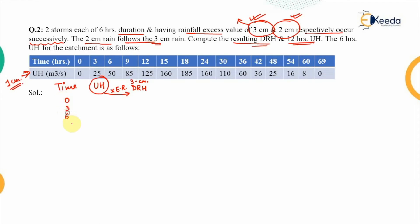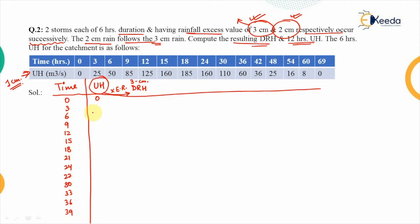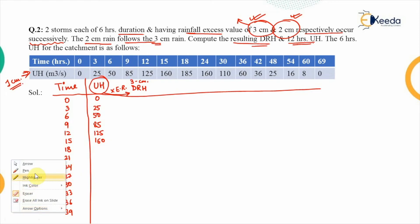The time steps are: 0, 3, 6, 9, 12, 15, 18, 21, 24, 27, 30, 33, 36, 39 hours. The unit hydrograph ordinates are: 0, 25, 50, 85, 125, 160, 185 at 18 hours. Since the data jumps by 6 hours, the value at 21 hours is interpolated by averaging the adjacent values, giving 172.5.